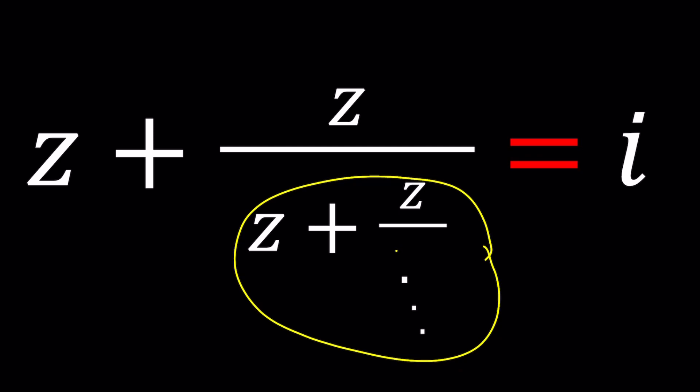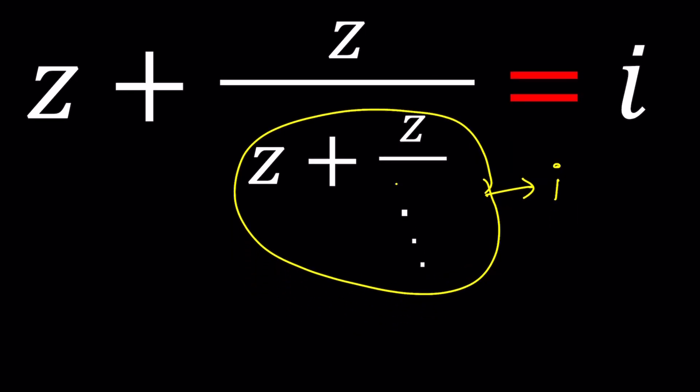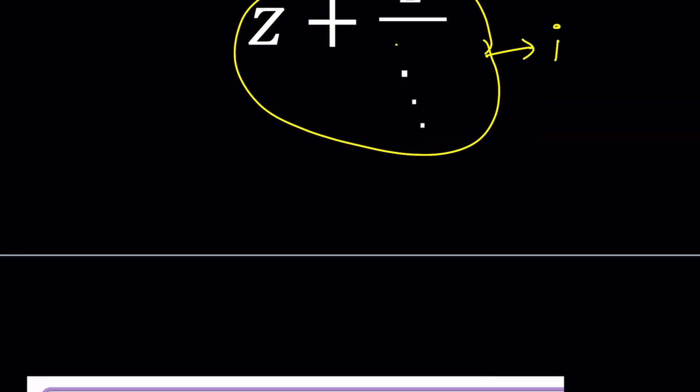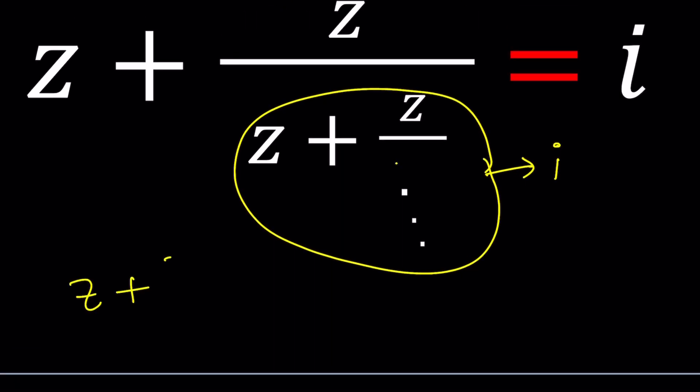In other words, if the whole thing is equal to i then this should also equal to i or converge to the same value, if there is a limit of course. Now how do we proceed with that? Well since the whole bubble was replaced with i, that's an infinite expression but I do know that it is equal to it, it's given. I didn't make any assumptions and then I get something like z plus z over i equals i.